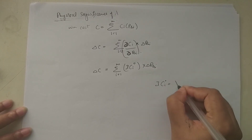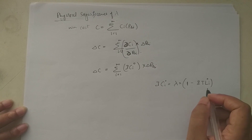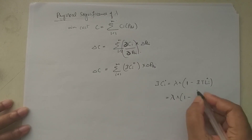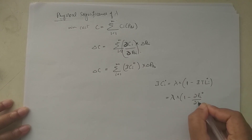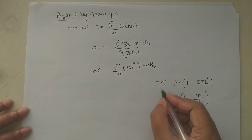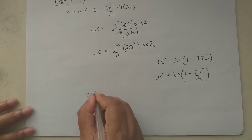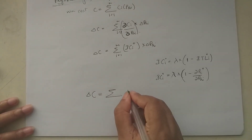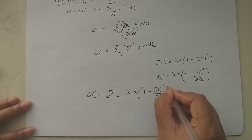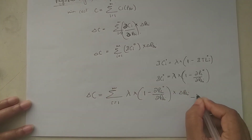From the exact coordination equation, incremental cost IC_i = lambda times (1 minus incremental transmission loss), which equals lambda times (1 minus ∂P_L/∂P_Gi). Substituting into the above equation: delta C = summation of lambda times (1 minus ∂P_L/∂P_Gi) times delta P_Gi for i = 1 to m — take this as equation 1.